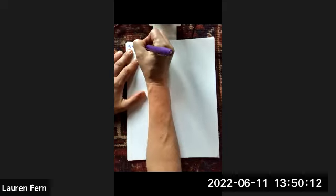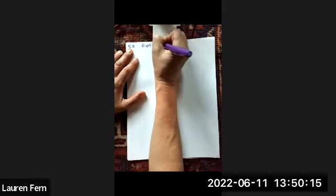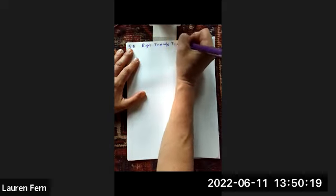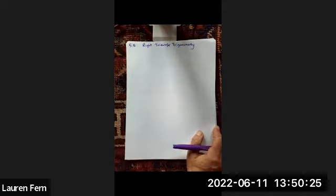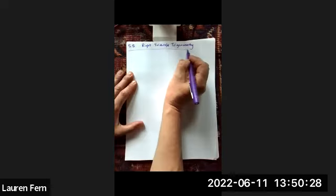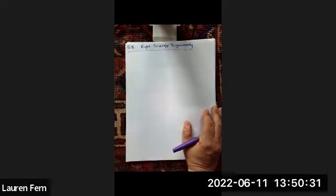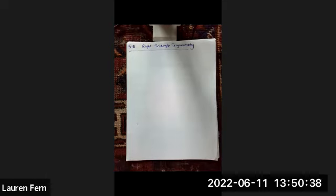Let's have a conversation about section 5.5, which is called right triangle trigonometry. I promise we are doing nothing different. This is just looking at our trig functions from a bit different perspective, because so far we've considered our trig functions in relation to the ratios of the sides of a triangle drawn in a circle. Now we're going to just look at triangles.